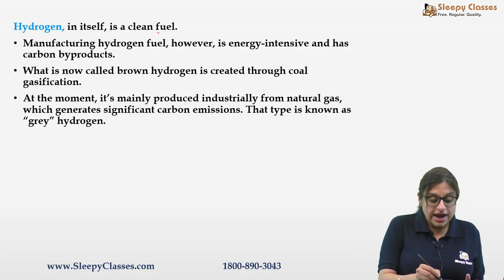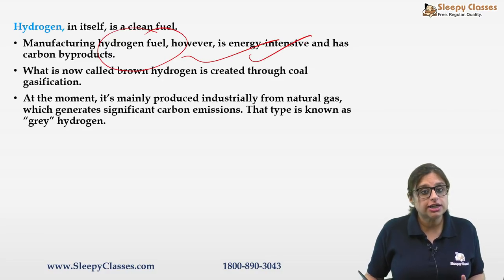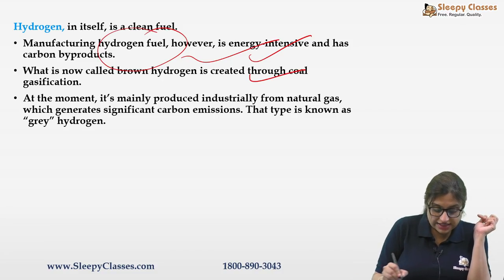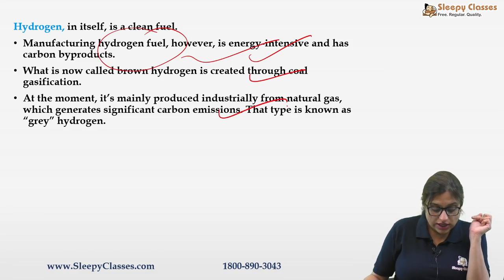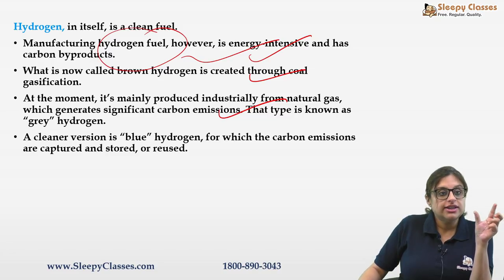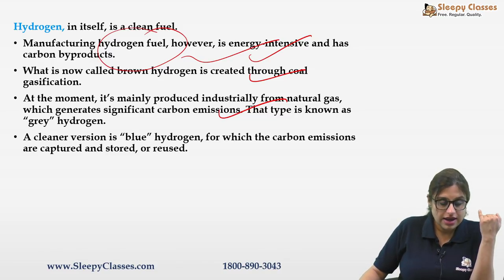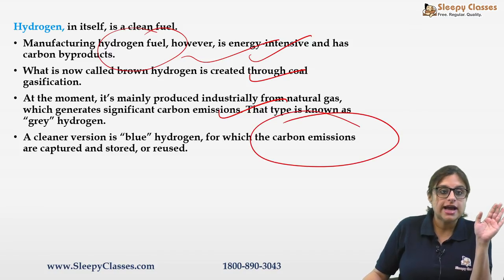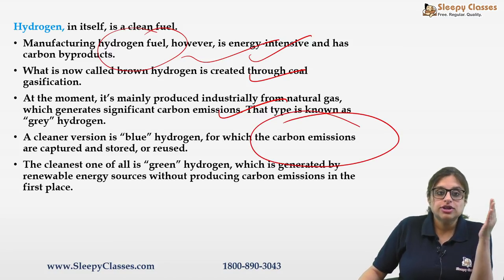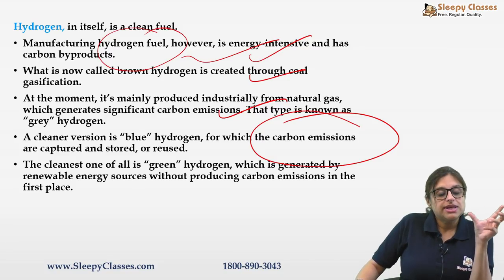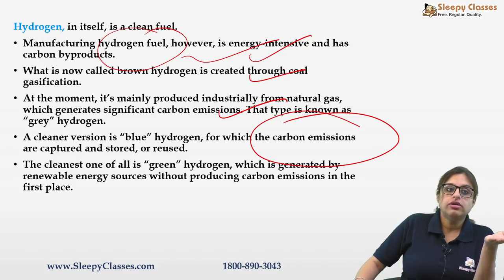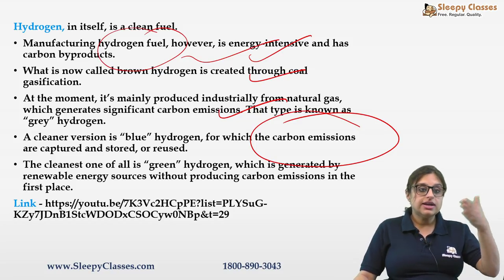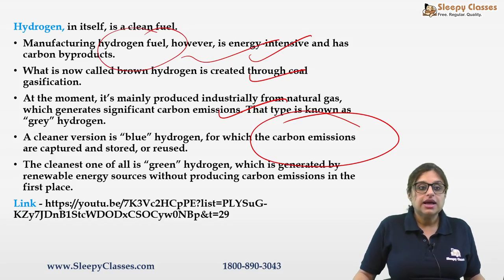Manufacturing hydrogen fuel is energy intensive and produces byproducts. Brown hydrogen from coal gasification, grey hydrogen from natural gas — both generate significant carbon emissions. Blue hydrogen captures and reuses those emissions. The cleanest is green hydrogen, produced from renewable energy without generating carbon emissions in the first place. These are the types of hydrogen you should know.